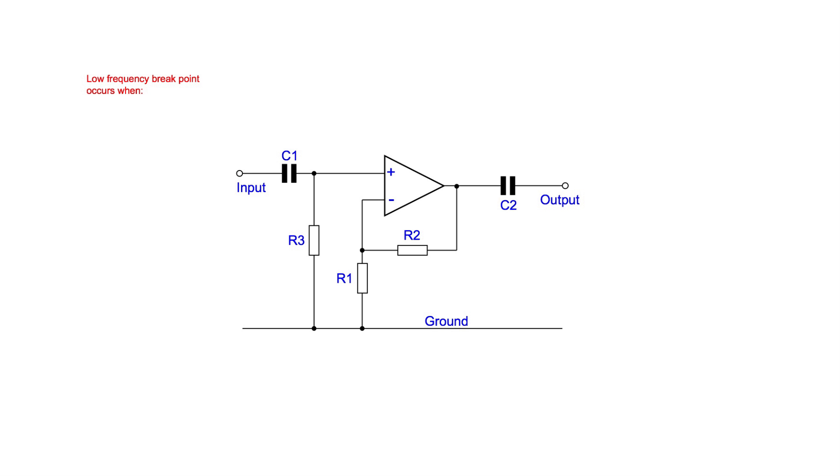We also need to ensure that the circuit will pass the low frequency signals we want. We need to calculate the low frequency breakpoint. This is the point where the signals have fallen by three dBs. This occurs when the capacitor reactance Xc equals the resistance for that circuit. For our input this is when the reactance of C1 equals R3. We know the general formula for reactance and as we know that Xc equals R we can substitute this in the formula and then rearrange it to find the capacitance we need.